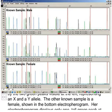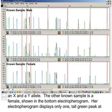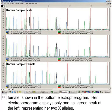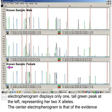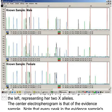The other known sample is a female, shown in the bottom electropherogram. Her electropherogram displays only one tall green peak at the left, representing her two X alleles.